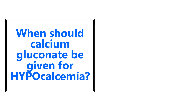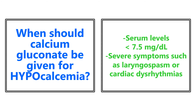When should calcium gluconate be given for hypocalcemia? Typically it's going to be for serum levels less than 7.5, or if the patient has severe symptoms such as laryngospasm or cardiac dysrhythmias. Obviously if the patient has laryngospasm, that's no good — they are going to need calcium gluconate.